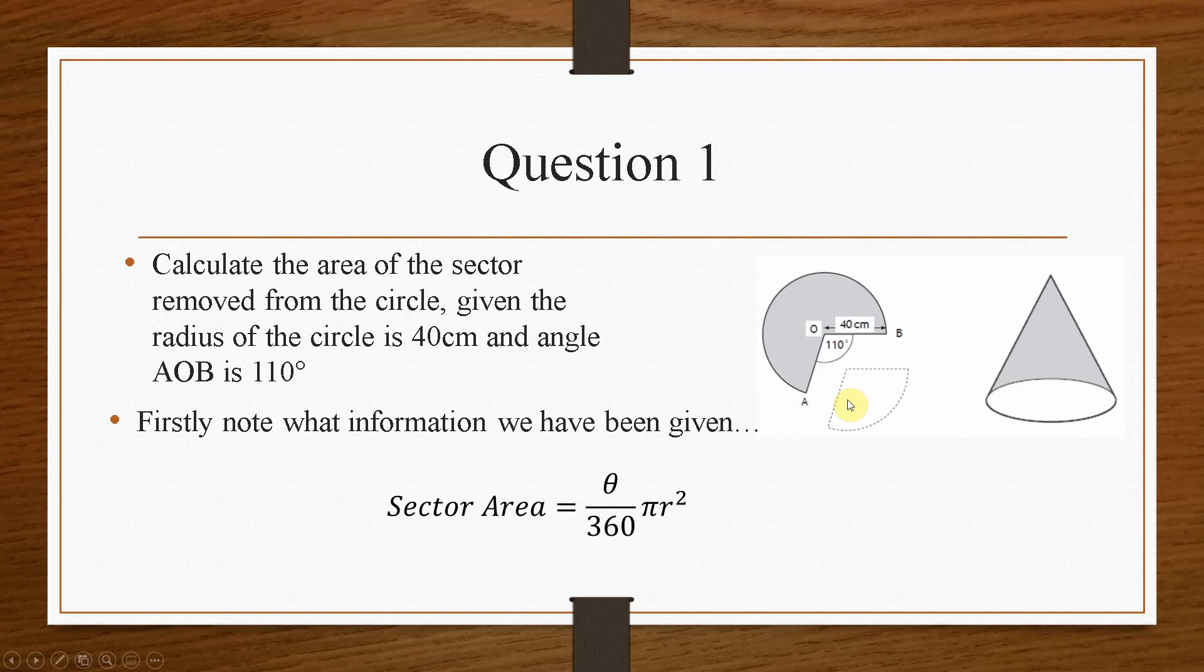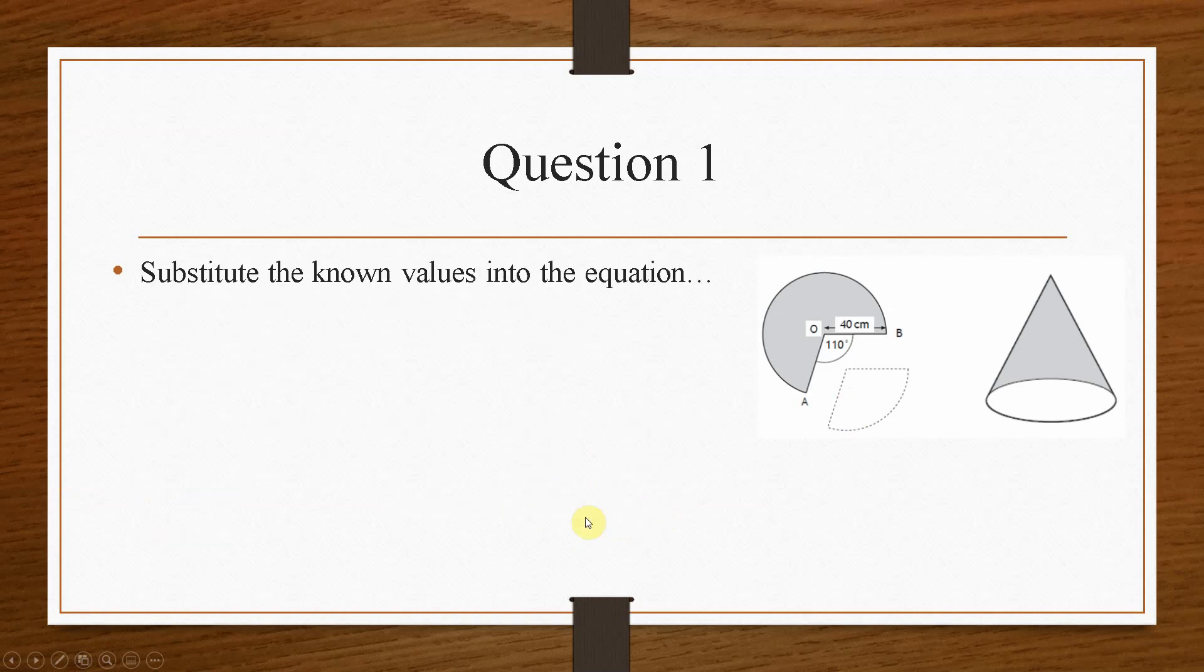So when you approach these questions, what you should always do is write down your equation and then write down the information that you are given. So in this case, we know what theta is, which is 110, and we know what r is. So we have all the information in order to solve this question.